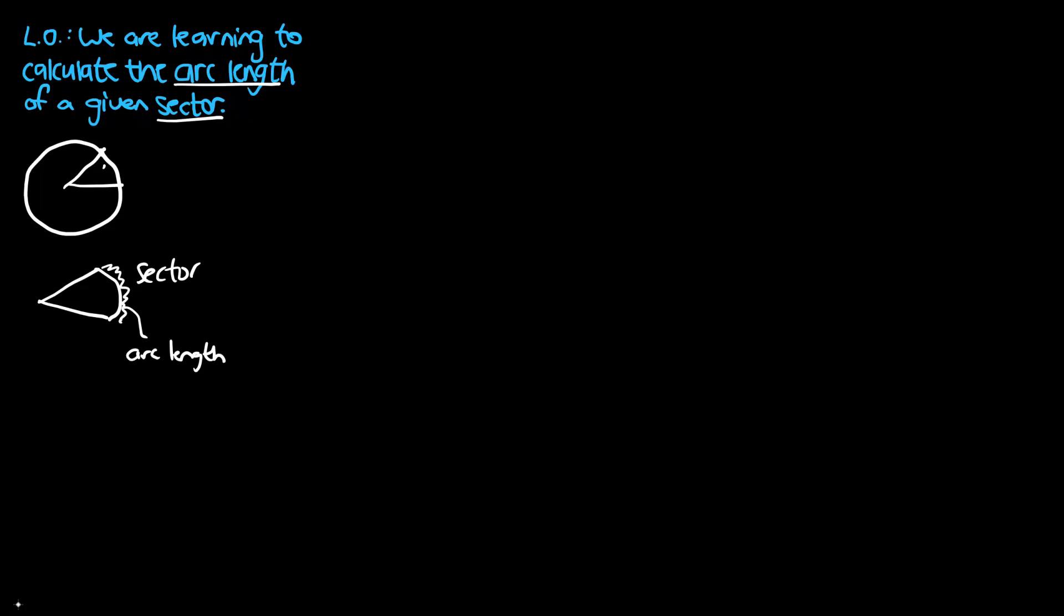We've actually got a formula where we can go ahead and calculate that arc length. So the formula we're going to focus on today, S is going to be equal to R times delta. So S is the arc length itself. We won't be shocked about this. R stands for the radius and the angle.